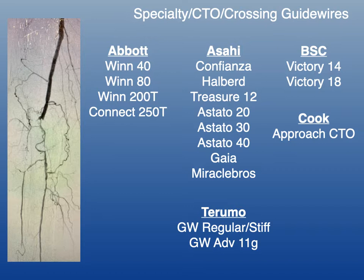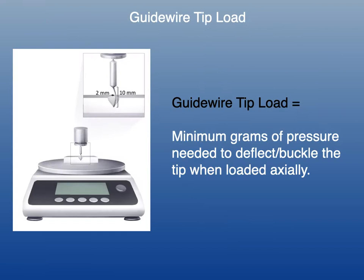The same goes for CTO guide wires. These guide wires are made by all the different companies in this space and have various names and tip loads. You don't have to know all of them — become an expert at a few and really understand their characteristics so that you'll be successful when dealing with CTOs in the peripheral space.